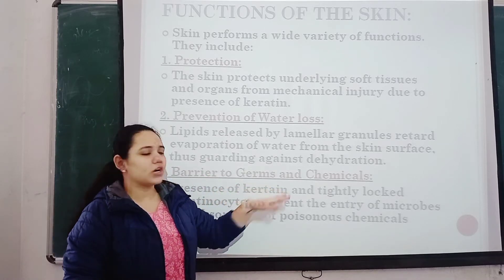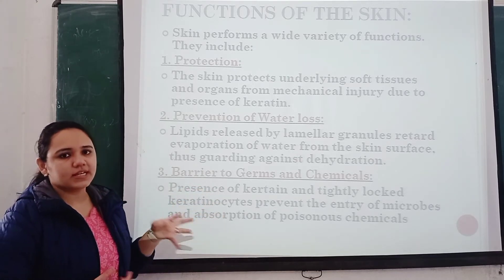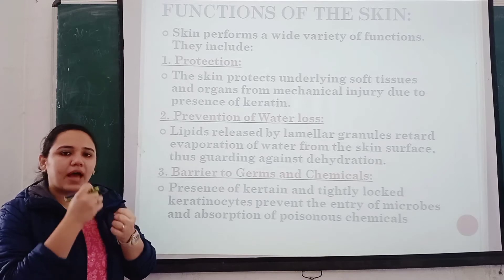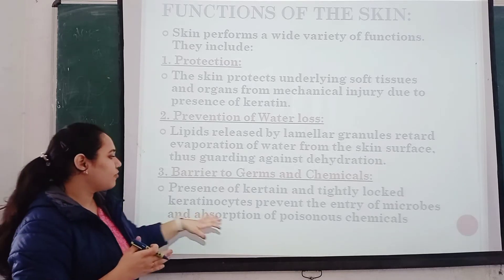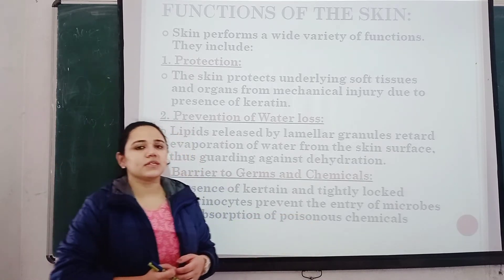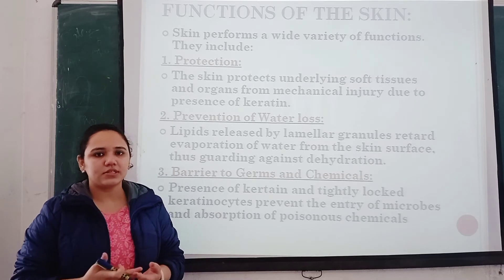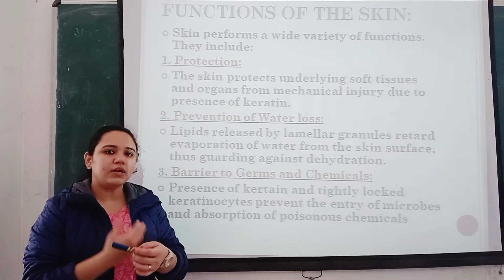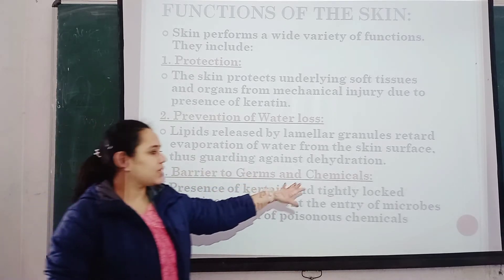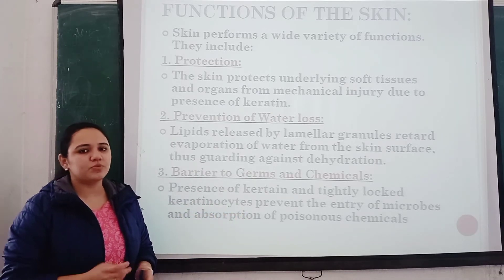Next is barrier to germs and chemicals. Keratin and keratinocytes are tightly locked together, which makes them act as a barrier and protect the skin from entry of microorganisms and also absorption of poisonous chemicals. For example, in a factory where poisonous chemicals are released, those chemicals will not enter our skin. It acts as a barrier to germs and chemicals because of the presence of keratin and tightly locked keratinocytes, which prevent their entry.